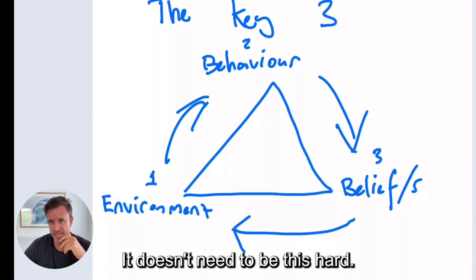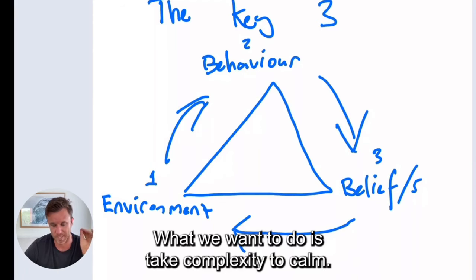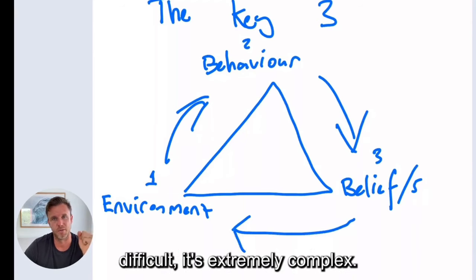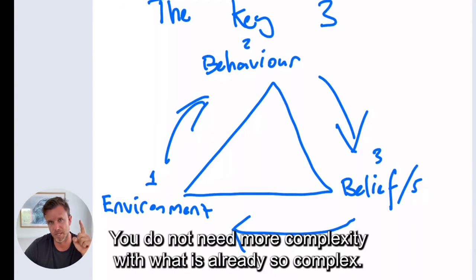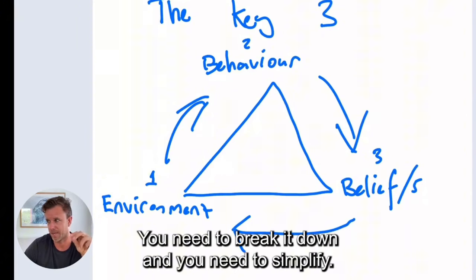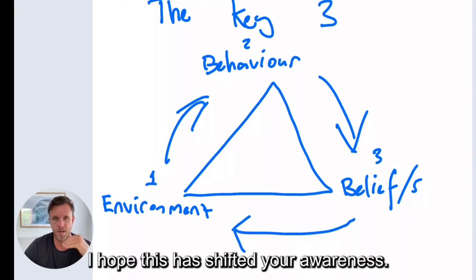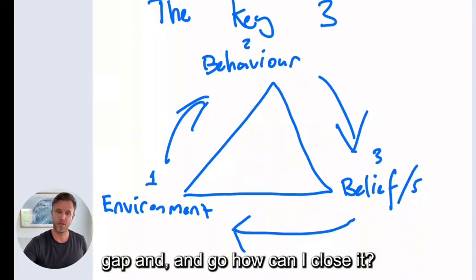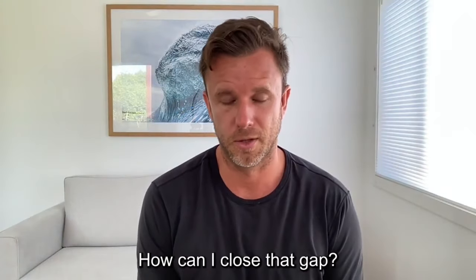You don't need to suffer the way you're suffering. It doesn't need to be this hard. What we want to do is take complexity to calm. We want to simplify things so you can start to move forwards. What you're going through is extremely hard. It's extremely difficult. It's extremely complex. You do not need more complexity with what is already so complex. You need to break it down and you need to simplify. I hope this has shifted your awareness. I really want you to look at that gap and then go, how can I close it?